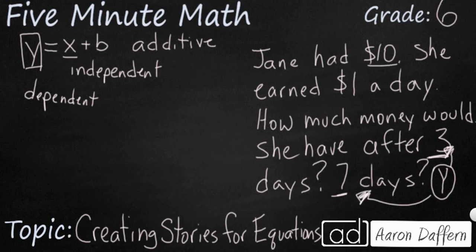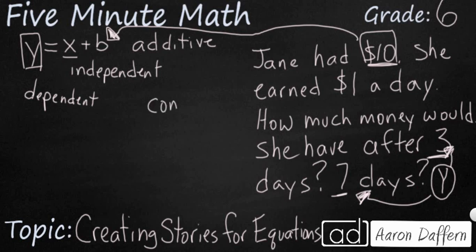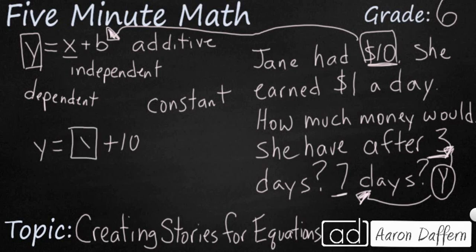She's going to start with ten dollars, and this is represented by our letter b. In this case, b means it is a constant — it has a fixed value. So she starts with ten dollars; that's not going to change. How much money she has after three or seven days is our y, our dependent variable. What changes is our x, our independent variable, and that is one dollar per day.